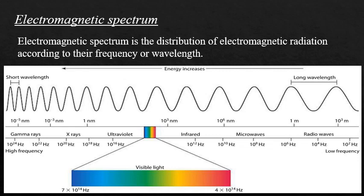The electromagnetic spectrum is a distribution of electromagnetic radiation according to their frequency or wavelength. There is no sharp division between one kind of wave and the next; the classification is based roughly on how the waves are produced or detected.